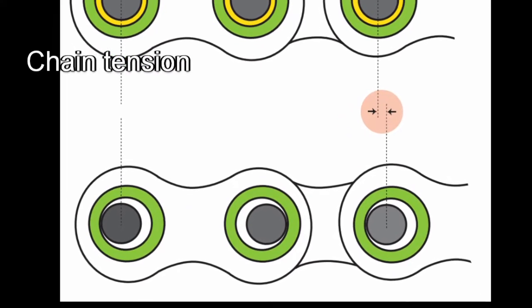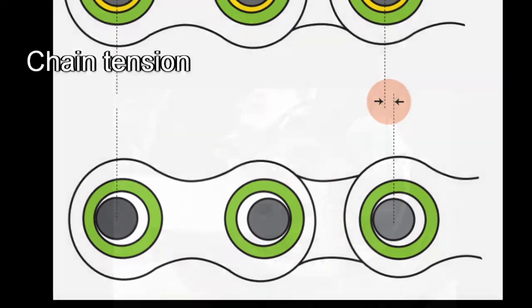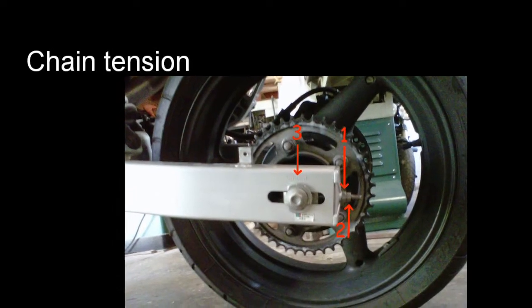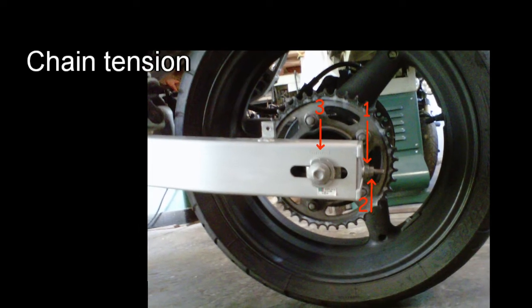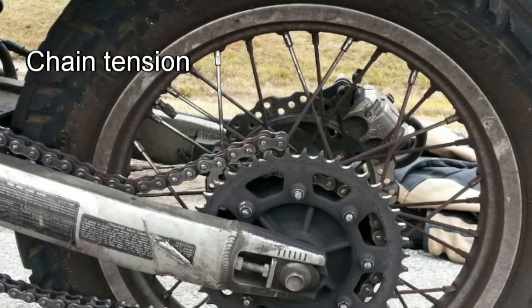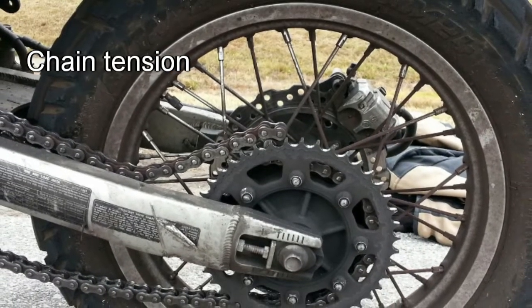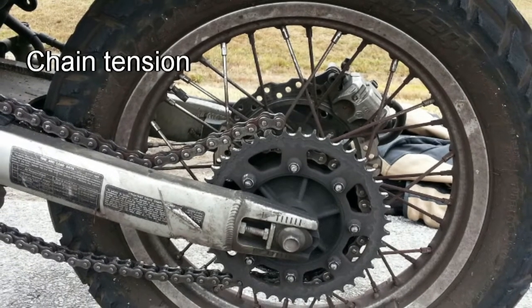This gradual increase in length is normal and perfectly fine, but you will need to keep an eye on it and periodically adjust the position of the rear wheel to bring the tension back to the right level. A loose chain can be incredibly dangerous, and a tension check is very fast and easy.